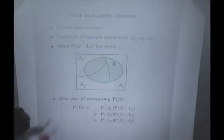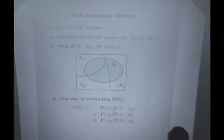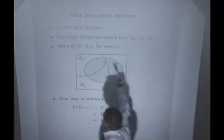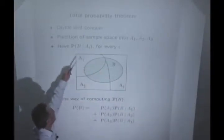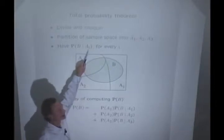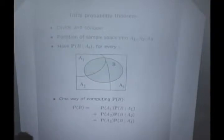And then there's a certain event B of interest, such as a radar records something or doesn't record something. We specify this model by giving probabilities for the AIs. That's the probability of the different scenarios. And somebody also gives us the probabilities that this event B is going to occur, given that the ith scenario has occurred. Think of the AIs as scenarios.